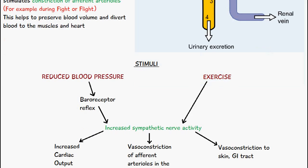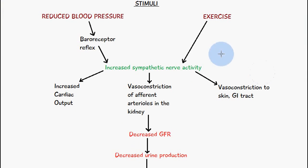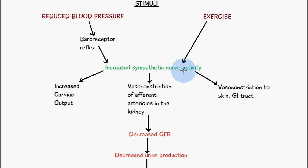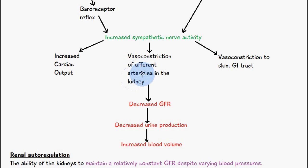I've included a flow diagram here to help explain it. We have some form of stimuli which would either reduce or increase the blood pressure. Exercise, for example, increases the blood pressure. It's detected initially by baroreceptors, and then via the baroreceptor reflex we have increased sympathetic nerve activity. From this we'll have an increased cardiac output, vasoconstriction of afferent arterioles in the kidney, and vasoconstriction to the skin and gastrointestinal tract. The effect of the vasoconstriction of the afferent arterioles in the kidney would be decreased glomerular filtration rate, decreased urine production, and increased blood volume due to preservation of blood via less filtrate production.